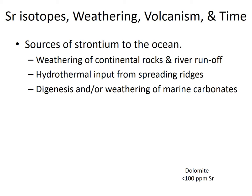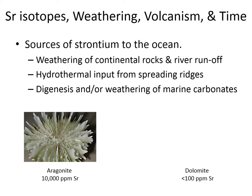For strontium isotopes, the ocean has three main sources. You can weather continental rocks, which puts strontium into river water that enters the ocean. Strontium can also enter through hydrothermal activity at mid-ocean ridges. There's also a third term: diagenesis of sediments, which brings in a different source. For example, a coral made of aragonite has loads of strontium because the crystal structure allows it. Over time that aragonite may turn to calcite through diagenesis, releasing that strontium into the porewater and ultimately back into the ocean.